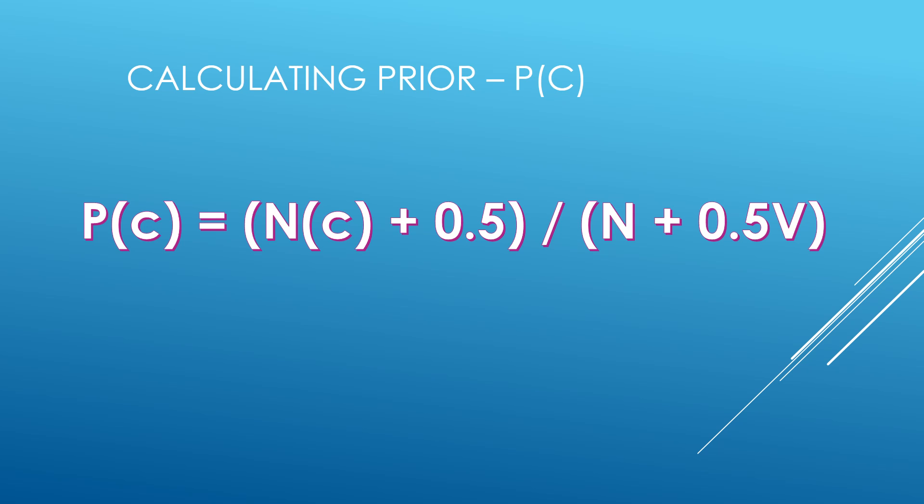Let us now see how we can calculate prior in the equation. Probability of C can be expressed as count of C plus 0.5 divided by N plus 0.5V, where N of C stands for number of times the correct word appears in the corpus, N stands for total number of individual tokens, and V stands for number of unique tokens, also called as vocabulary. Now, what we need to notice here is that even if N of C is 0, the entire formula does not become 0, hence facilitates us to smooth the values of probability of C.